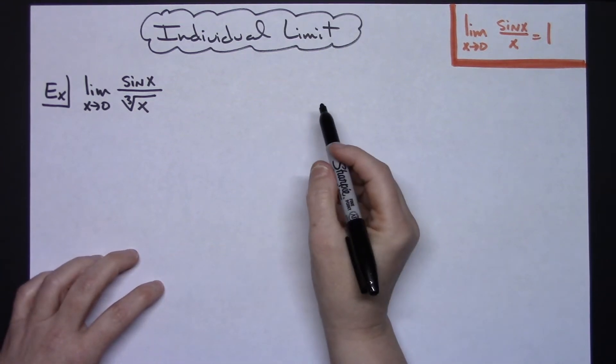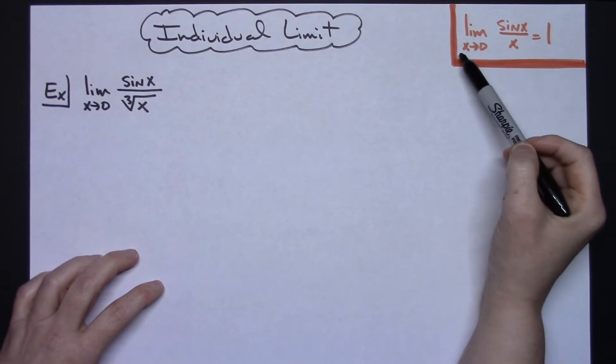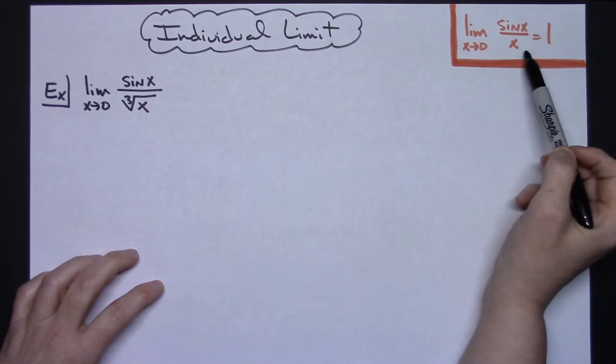In this video I'm going to work out an individual limit and take advantage of this property: the limit as x approaches zero of sine x over x equals one.